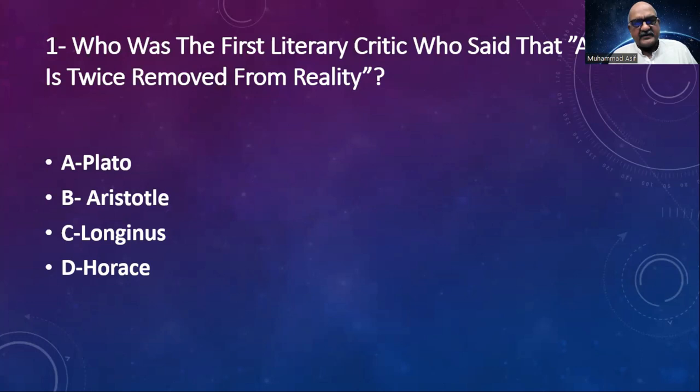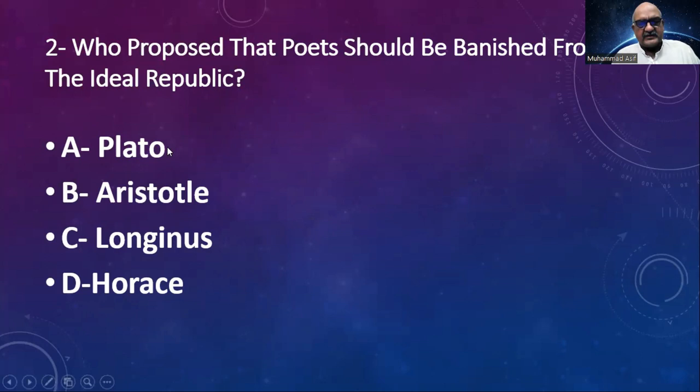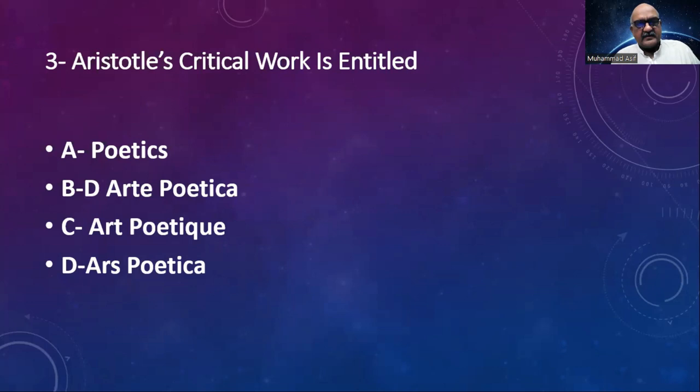Number two: Who proposed that the poet should be banished from the ideal republic? Options are Plato, Aristotle, Longinus, Horace. The answer is again Plato. Plato based his ideal republic on the principles of reason and logic, and he believed that as poets watered feelings and emotions, they did not deserve a place in his republic.